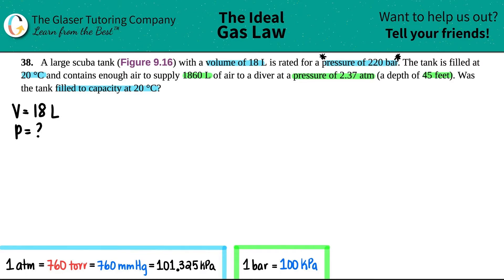Now let's see, they did say that the tank was filled at 20 degrees Celsius, so they give me a temp as well—20 degrees Celsius. And when they do that, it contains enough air to supply 1860 liters. So that's a new volume, so I'm going to put this over here. Maybe I'll put it over here, so I got a volume of 1860 liters.